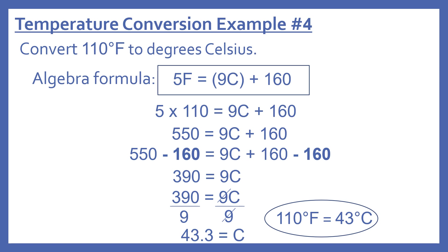We subtract 160 from each side: 550 minus 160 is 390, so 390 equals 9C. Then we divide both sides by 9 to get C by itself: 390 divided by 9 is 43.3, and that equals C. So 110 degrees Fahrenheit equals 43 degrees Celsius.